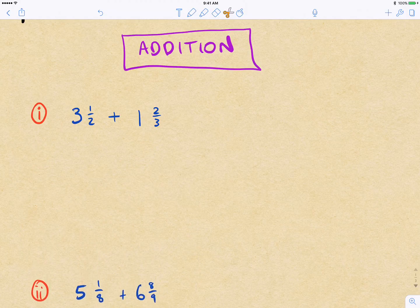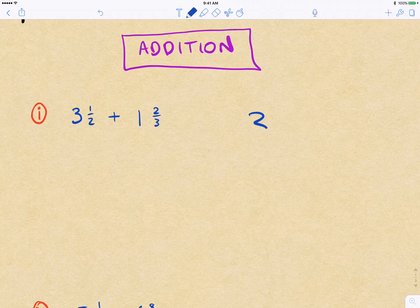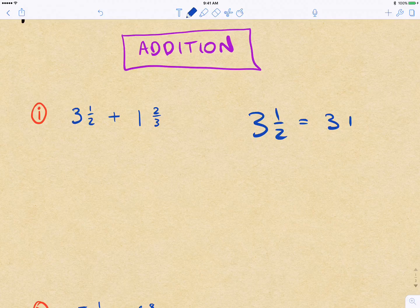Now, one of the first things to draw your attention to with a mixed number, so with something like 3 and 1 half, this implicitly means 3 plus 1 half. So even though we don't write the addition symbol in there, you do need to keep in mind that it is referring to addition anyway.